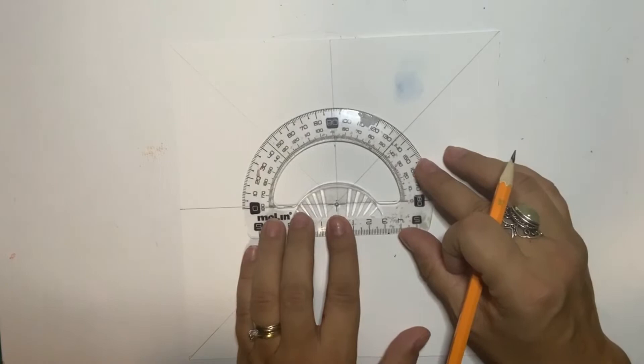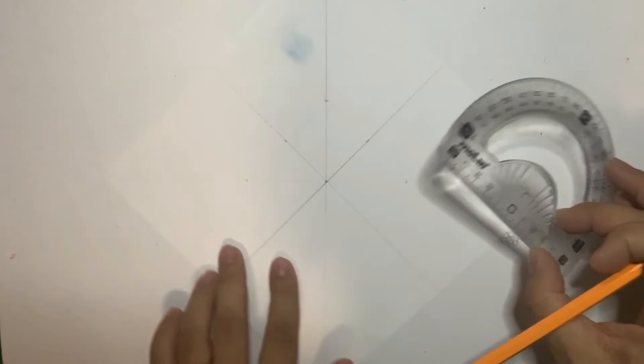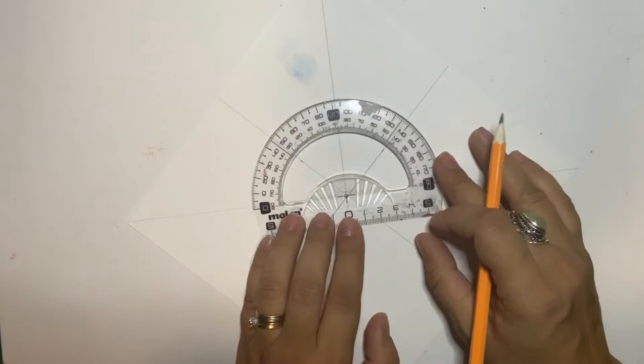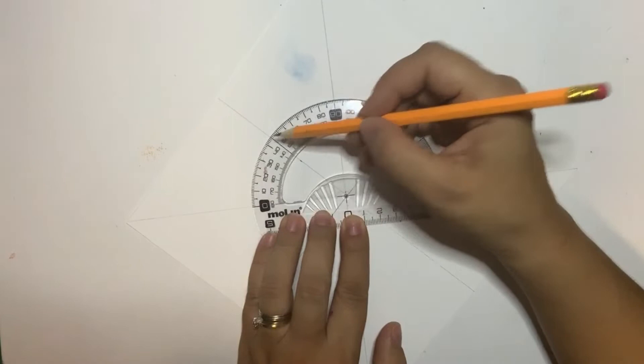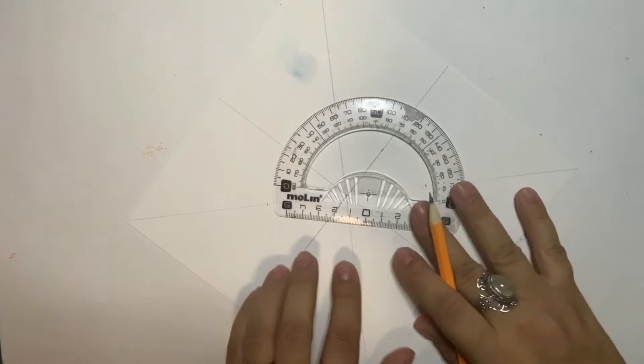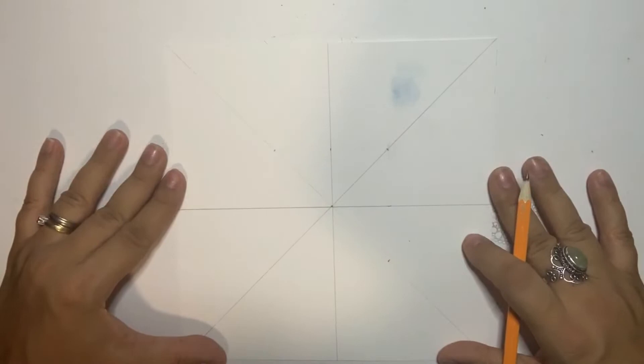So once I've found the diagonal first, I place the protractor just like this, aligning zero with the center of the mandala and with 90 degrees in the diagonal line. Then I can mark 45 degrees, 90, and 135 degrees and so on. Just use the method that's easier for you.